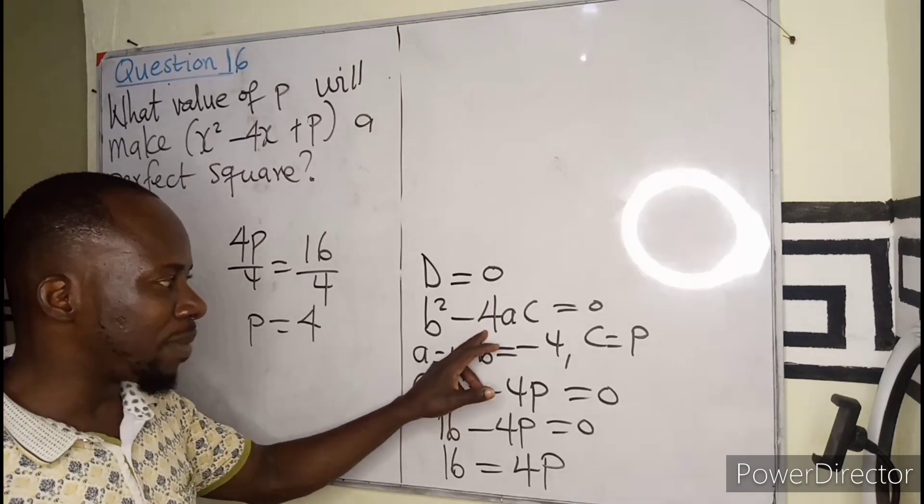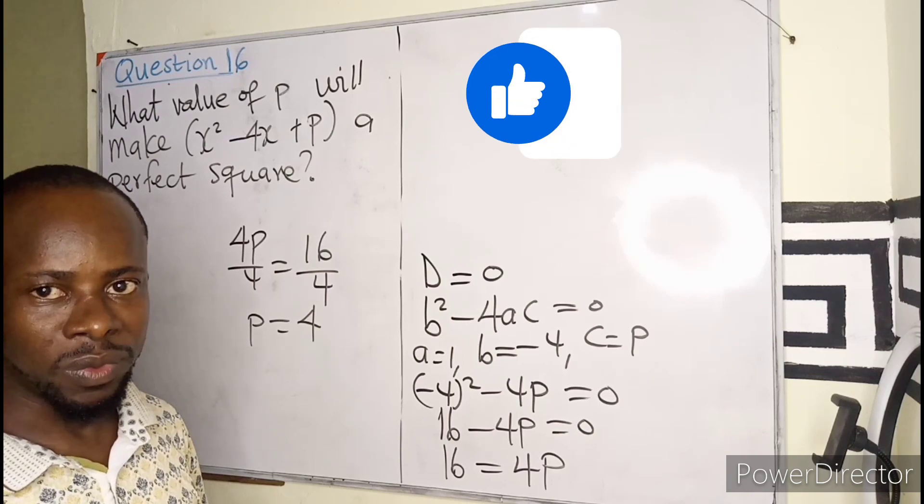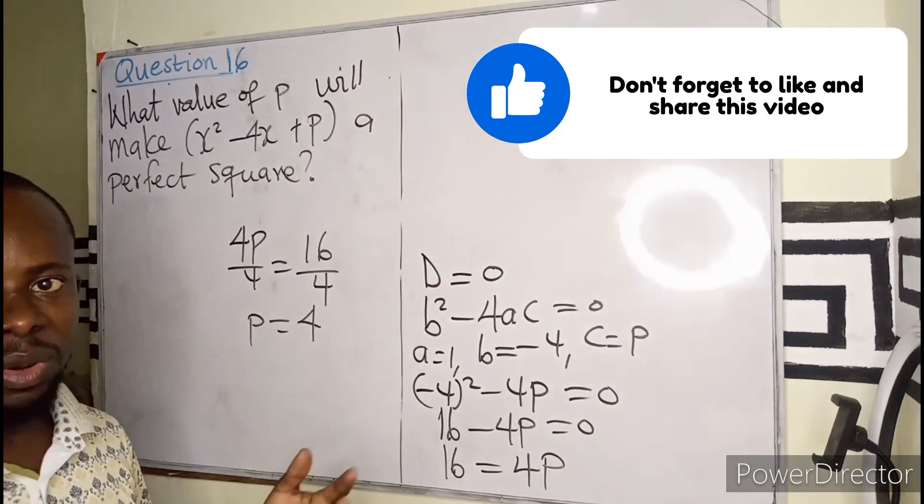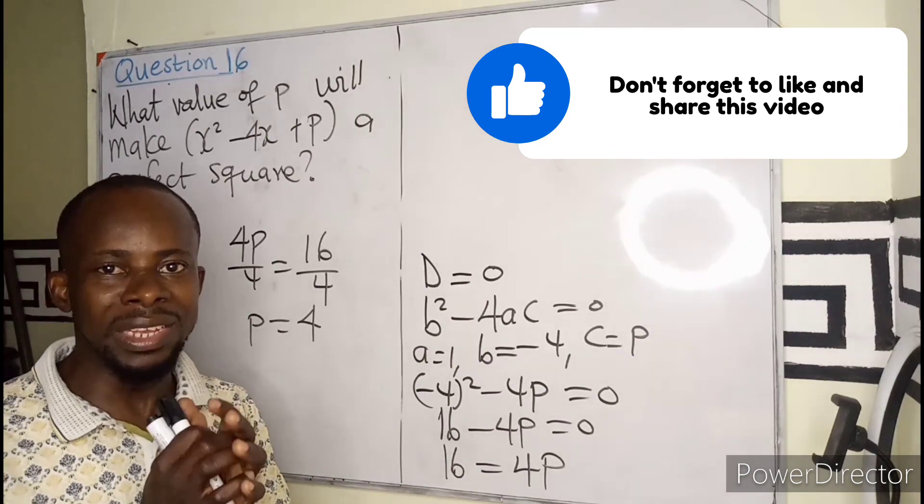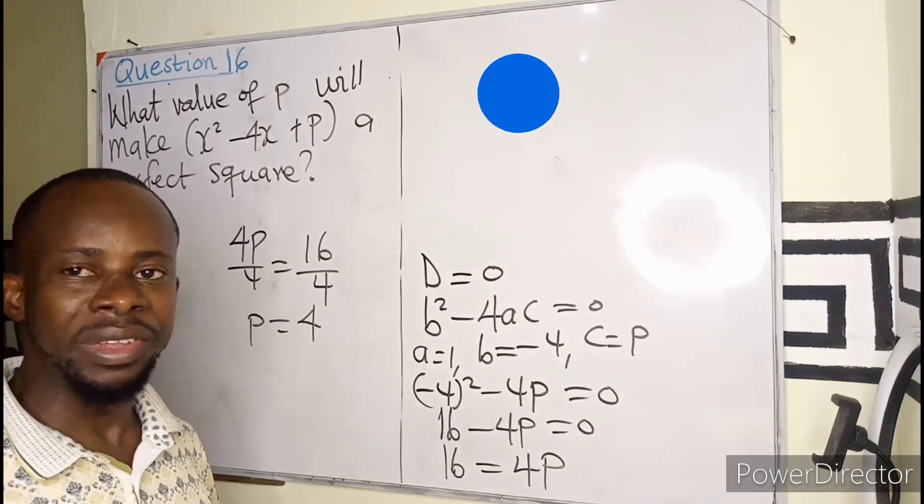So anytime you are looking for a quadratic equation that is perfect, your discriminant must be equal to 0. Then you are good to go. Alright, I believe if you followed, please leave your comment below and like the video and share with anybody who you think might need this video. See you in the next episode, question 17.